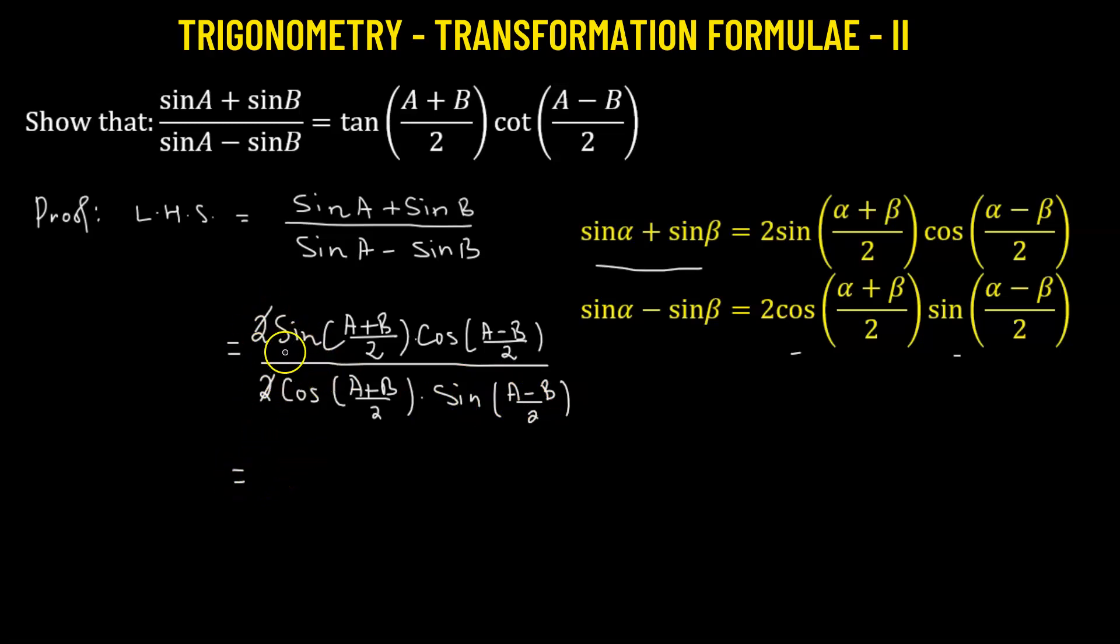Now we know that the ratio of sine over cosine, that's the tangent function, provided they have the same angle. So sine of a plus b over two over cosine of a plus b over two, that's going to become tangent of a plus b over two.